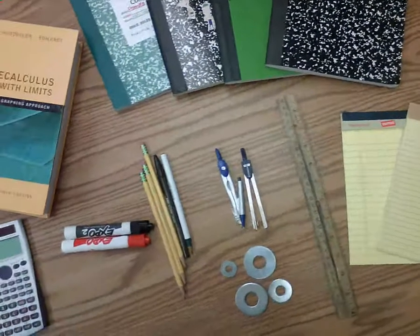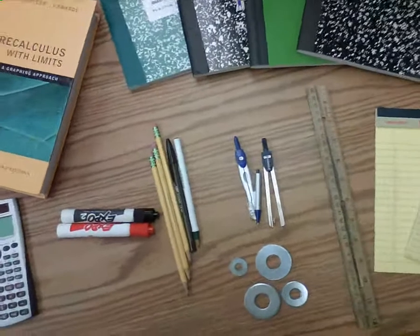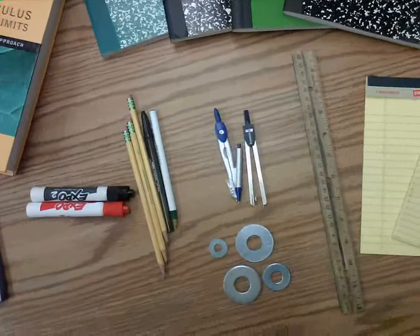For our geometry students, we need a compass and a ruler. And we like to have these metal washers for drawing some nice, neat circles.